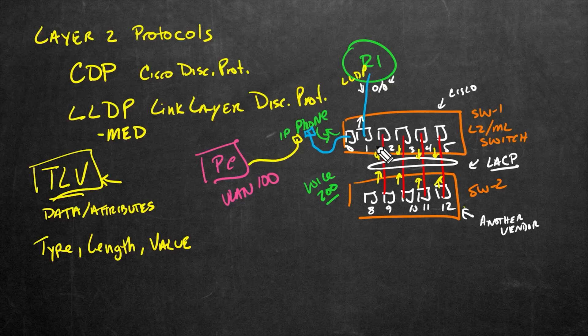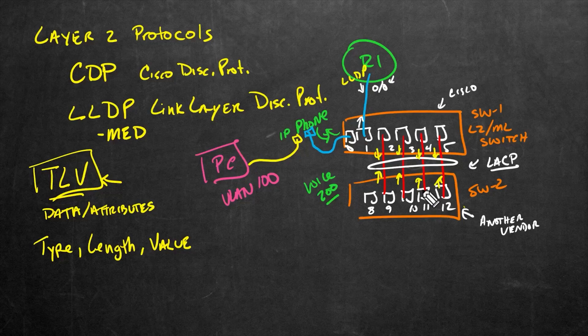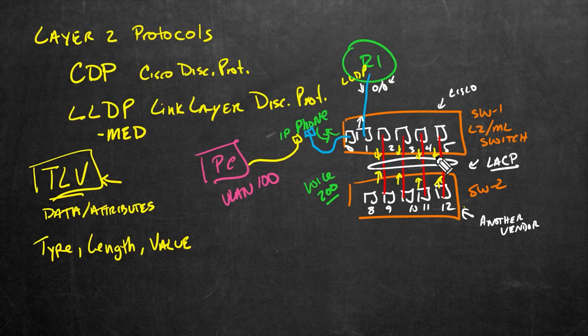Or on the other hand, if we don't want to share, for example, our system description or some other attribute, we simply specify to the switch, hey, when you send these little LLDP messages, don't include this or do include that, depending on how much information we want to share with the other side.